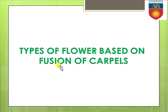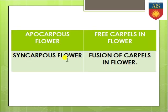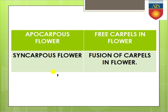Going to the next — types of flower based on the fusion of carpels. There are two main types: syncarpous and apocarpous. An apocarpous flower is one where the carpels are all free — not united, not connected with each other. A syncarpous flower is one where the carpels are united with each other and form a single unit. These are the two types based on carpel fusion.